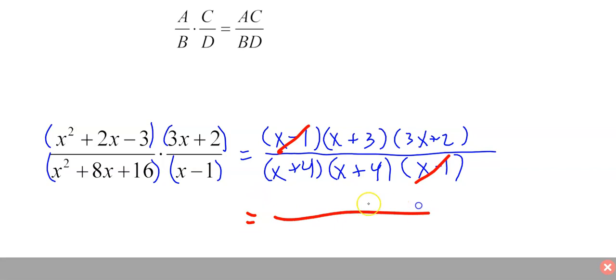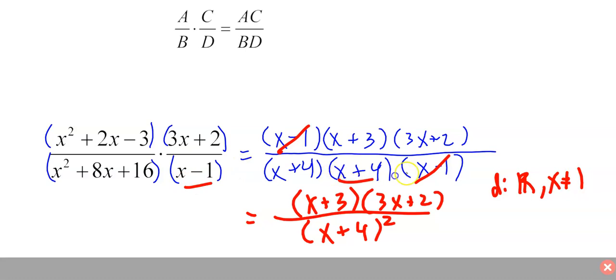So in the numerator you're going to have X plus 3 times 3X plus 2. Sometimes you get more than just that to cancel. X plus 4, I would write it this way, X plus 4 squared, rather than X plus 4 times X plus 4. And you're done. If you wanted to write the domain, the domain is all reals except X cannot equal 1 because of this, or negative 4 because of that. So X also cannot equal negative 4 because that would make the denominator zero.